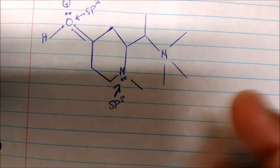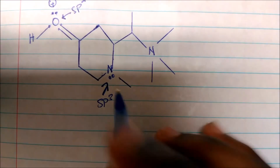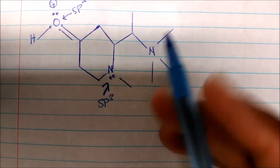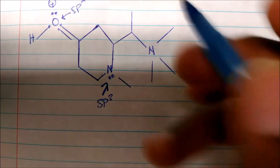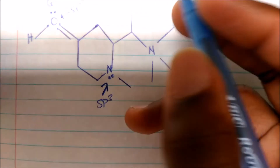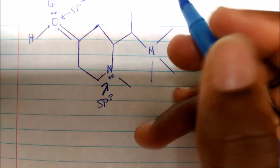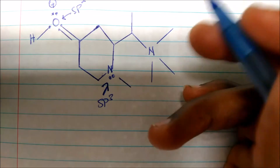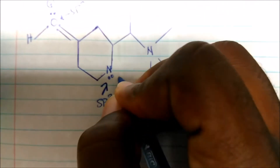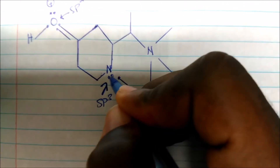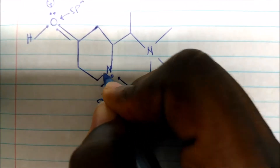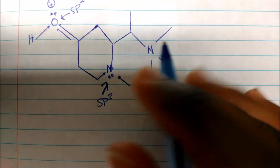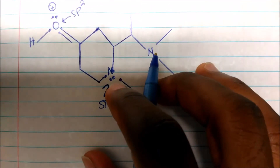They should match. The formal charge on this nitrogen will be zero. Let's check: nitrogen has a valence electron count of five, and how many electrons total are around nitrogen? One, two, three, four, five. Five minus five is zero, so that nitrogen has no formal charge.